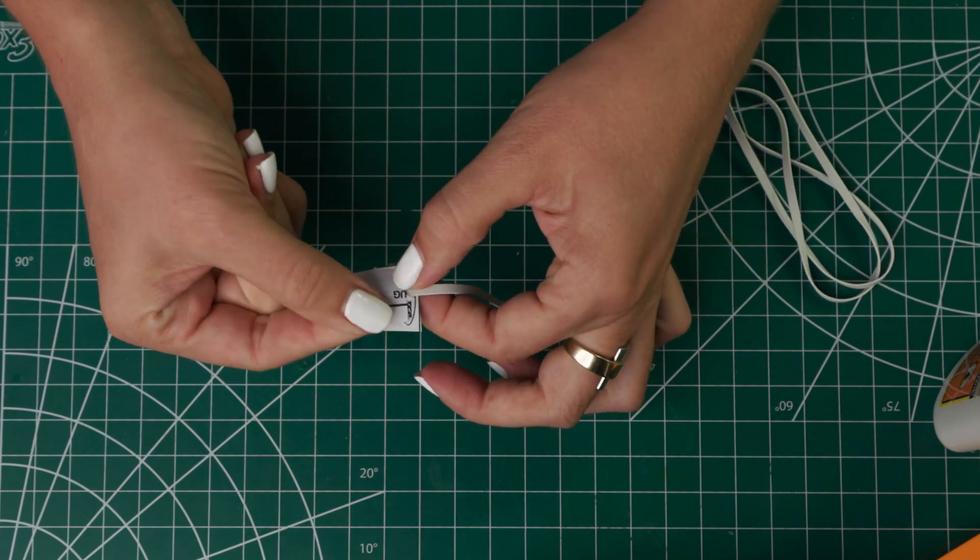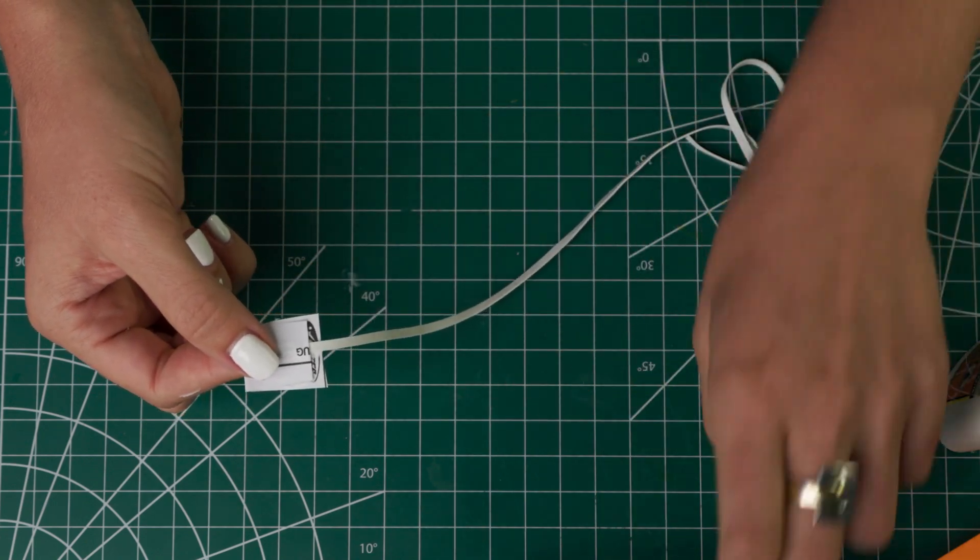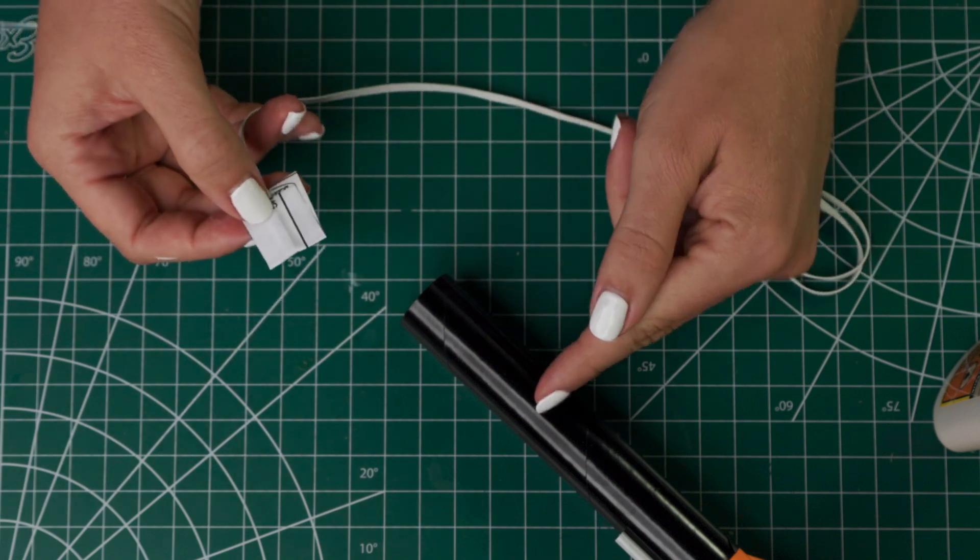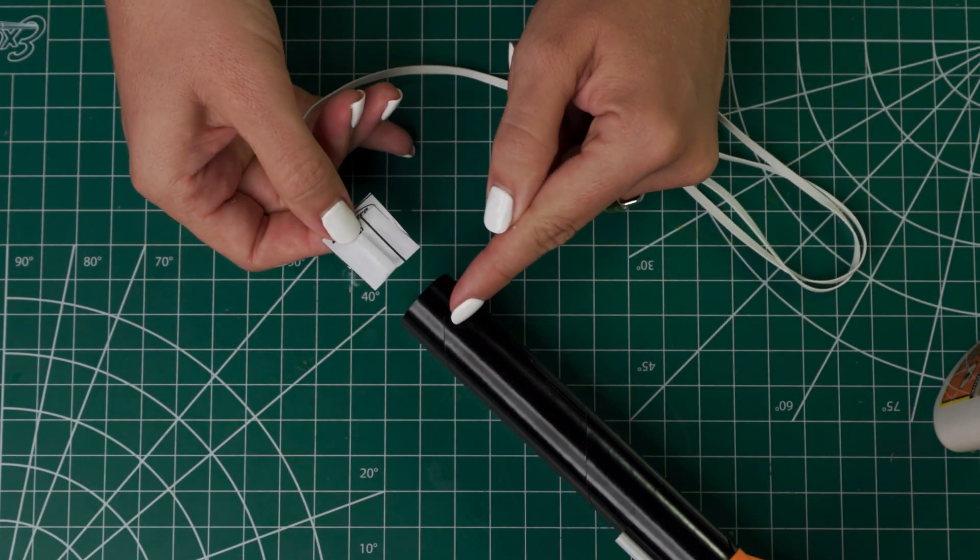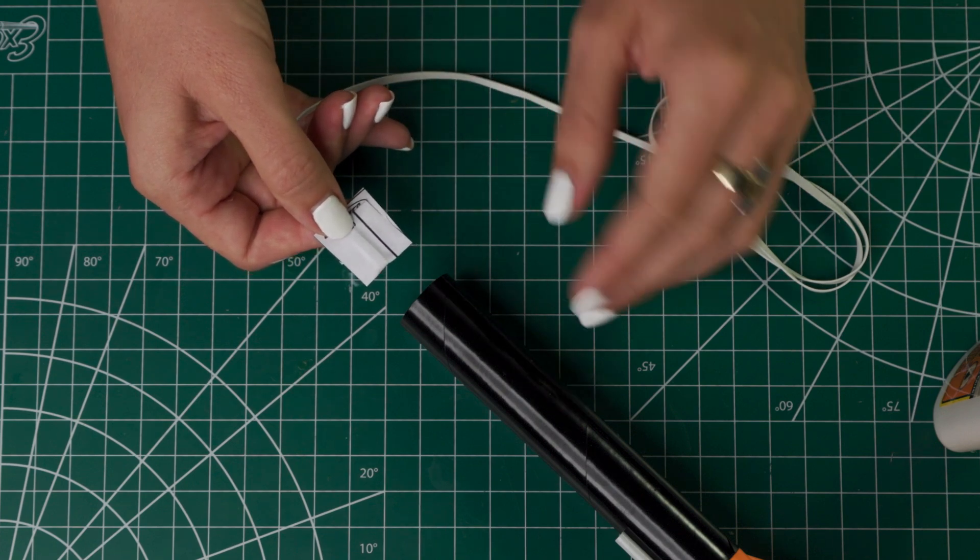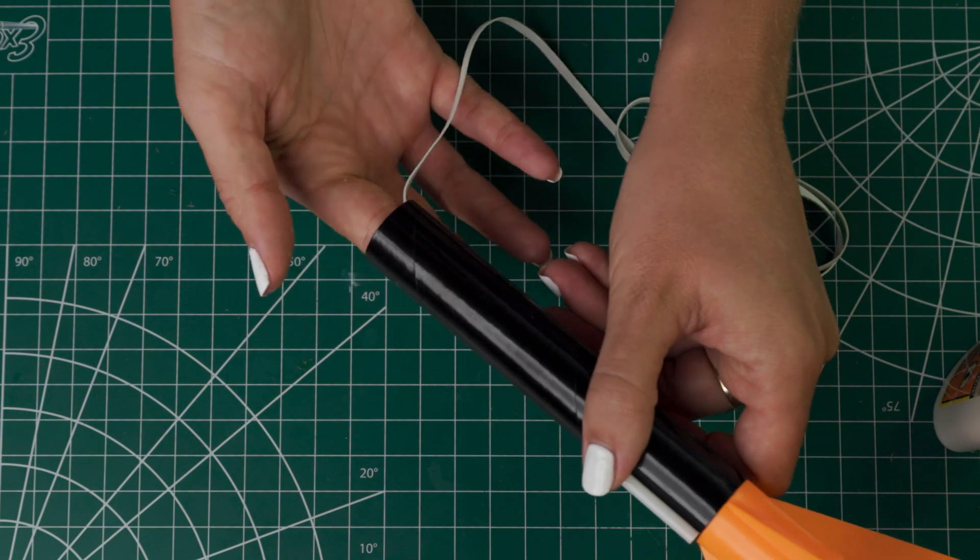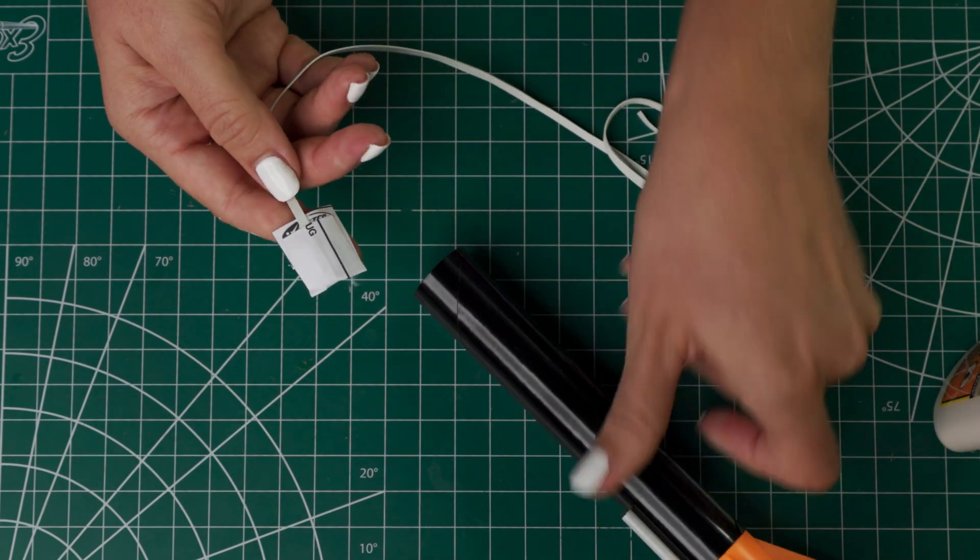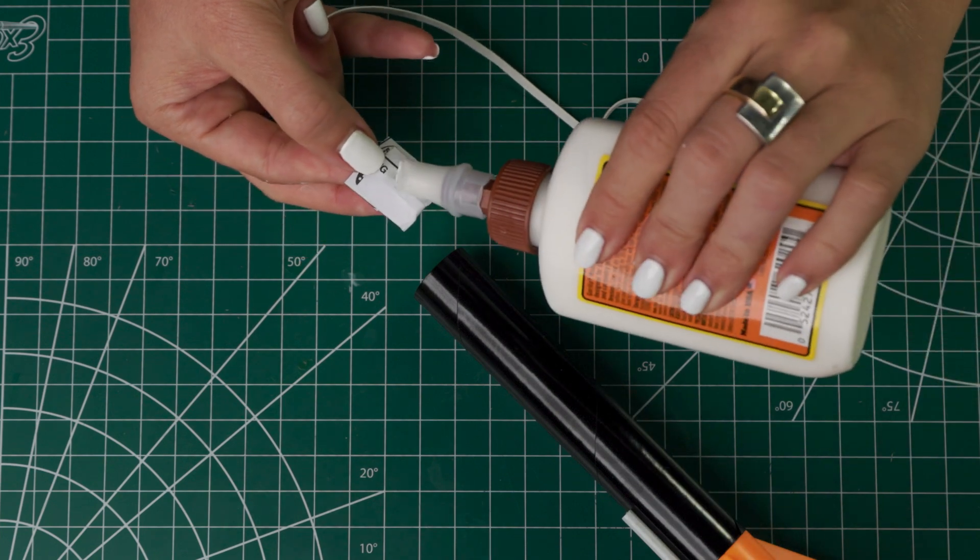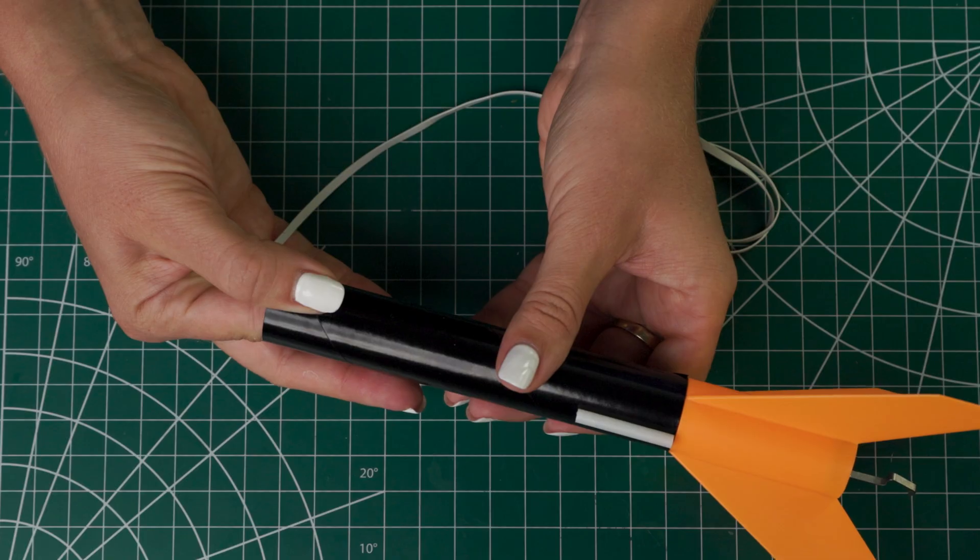Then you can hold this until it sets. Once that has set, and again, that will depend on how much glue you used, but once that's set, we're going to put it inside the body tube. And what you want to do here is to put it at least an inch and a half down. You don't want to put it right near the top because then you're going to run into it when you're trying to put the nose cone on. So I generally just try and do it as far as I can reach down. So just put a little bit of glue here and then place it inside the body tube. And then just hold that till it sets.